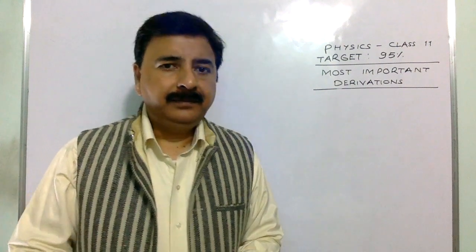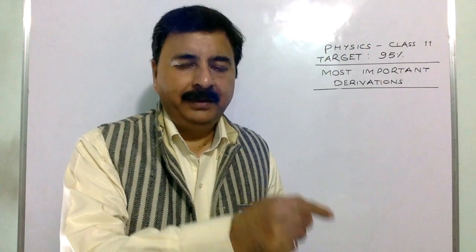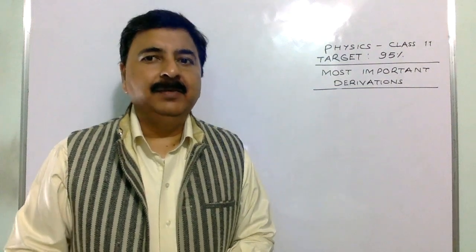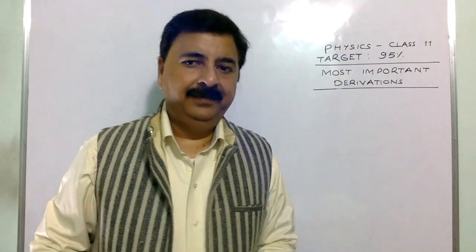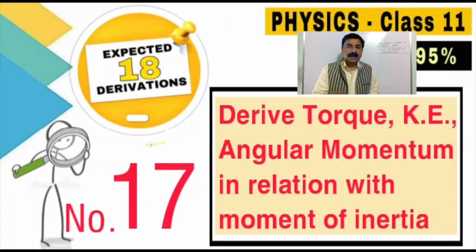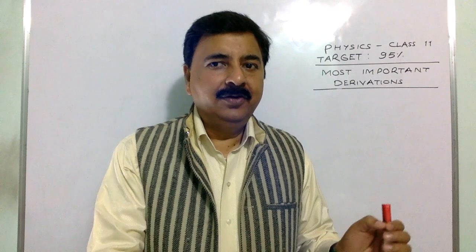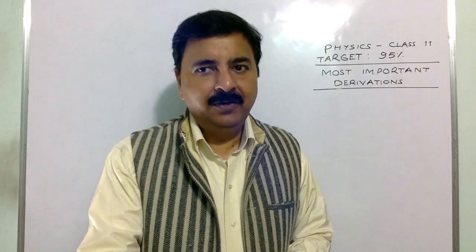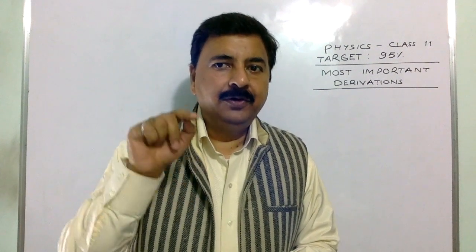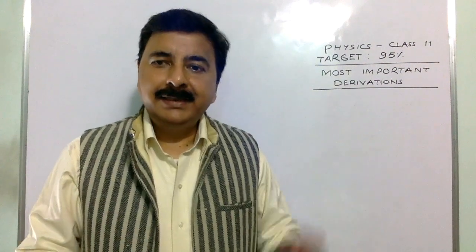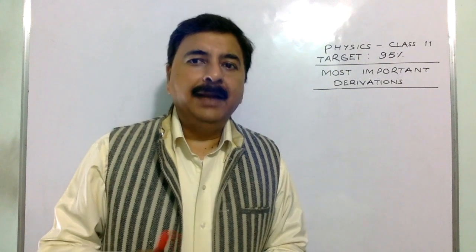The 17th derivation I selected is from rotation. Rotation is also an important chapter. You will get some numerical from center of mass, moment of inertia definitely. But as far as the derivation is concerned, I think the derivation of torque, kinetic energy, and angular momentum linked with the moment of inertia — like kinetic energy is equal to half I omega squared. The teacher can ask you to prove KE = ½Iω². So revise that in a proper manner.